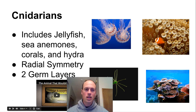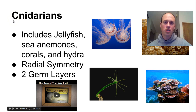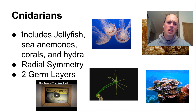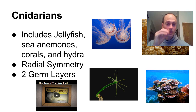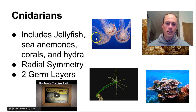Now we're going to take a look at cnidarians — you don't say the C. This includes jellyfish, sea anemones, corals, and hydra. They all have radial symmetry, which means from a bird's eye view it's going to be the same on both sides of any perfect halfway cut. They are symmetrical radially and have two germ layers as part of the blastula.